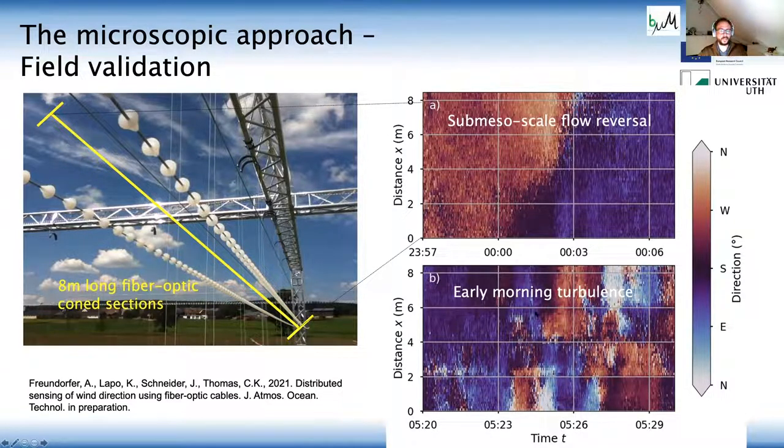And the lower one basically shows an early morning turbulence example. So there's much more three dimensionality to this. So you see much time variability and time and space of the wind direction. So that's really is the developing turbulence as the atmosphere transitions from the nocturnal state to the diagonal state. And with this, I'll end here and I'll turn it over to Carl.